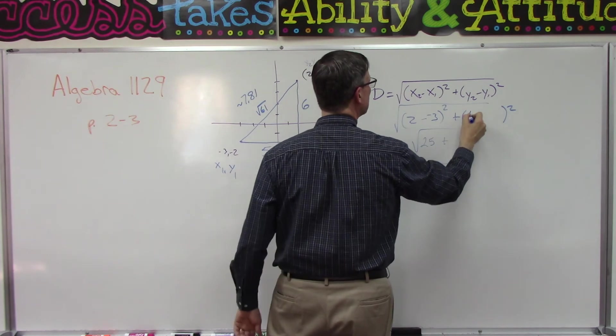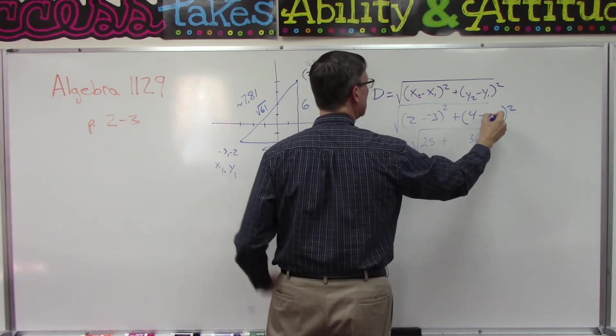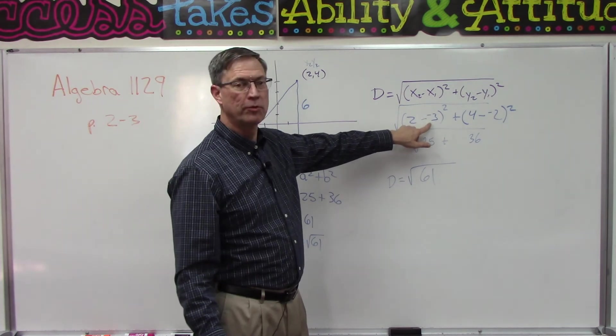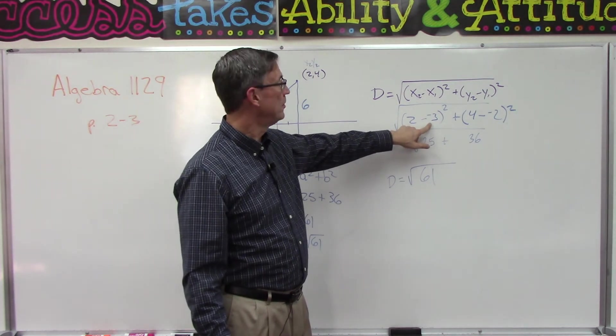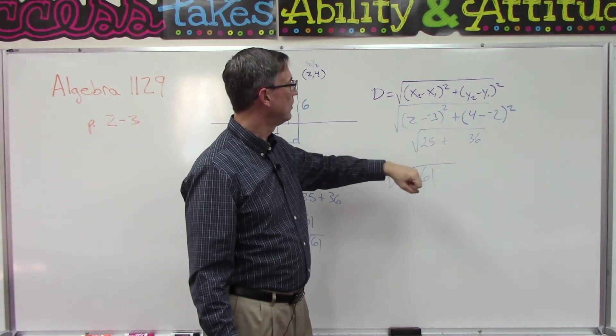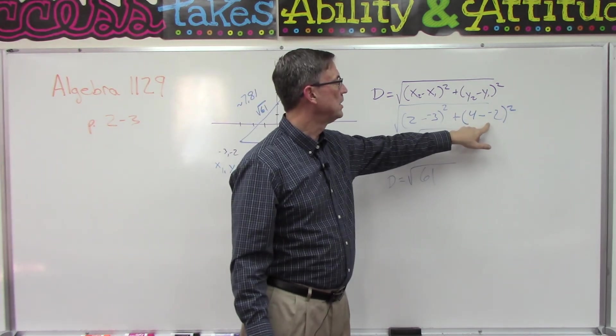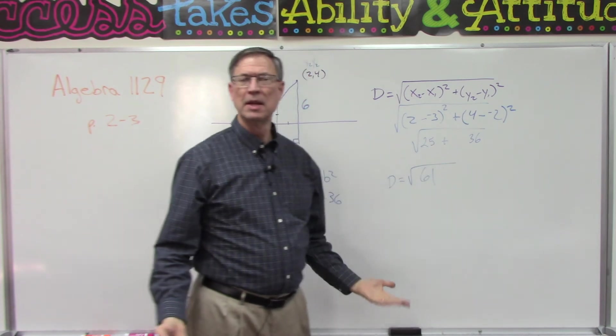Look what happens: 2 minus negative 3 would be 5, and so 5 squared is still 25. 4 minus negative 2 would still give me 6, 6 squared is still 36. So this is a really cool formula. It doesn't really matter which order we put these two points in.